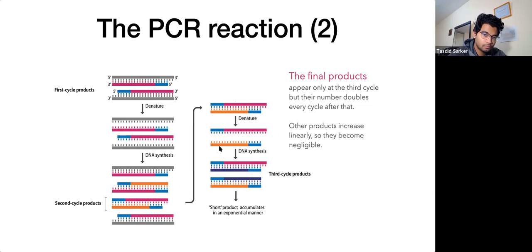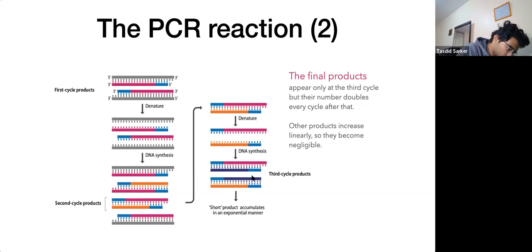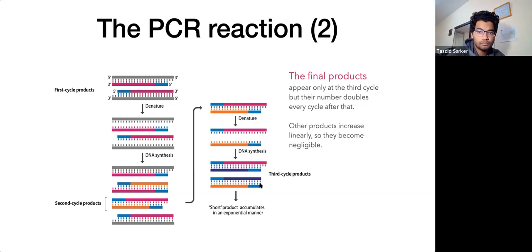These fully primer-flanked products are the ones that increase exponentially throughout the remainder of the reaction — multiplying by two every cycle. The longer products from earlier cycles are created only linearly, one per cycle. So at the end of the reaction, the exponentially amplified products are an overwhelming majority — the others are not even quantifiable in comparison.